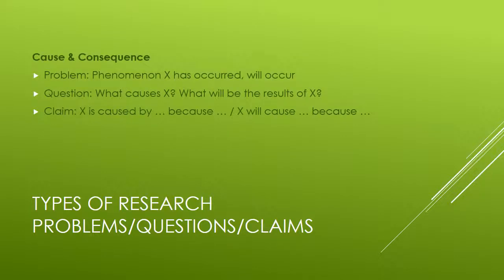Cause and consequence research projects: the problem is that a certain phenomenon X has occurred, will occur, or some situation exists now. The question is what causes X, or what will be the results of X if it occurs? The claim you make is this is caused by blank and we know that because, or this will cause blank and we know that because such and such. We're looking for the best ways to explain why something has happened, or what we can predict will happen as a result of something and how we know those will be the resulting causes.